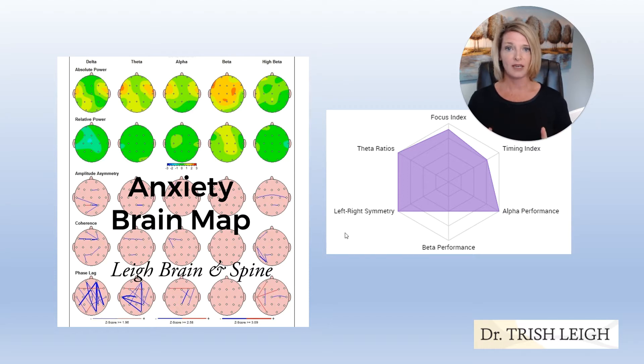We're going to look at the anxiety brain map in two formats. On the left hand side is the traditional QEEG brain map that you would have performed in my office at Lee Brain and Spine. On the right is the most advanced type of brain mapping that is performed in your own home. You do it yourself.